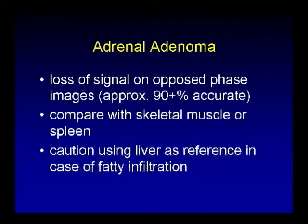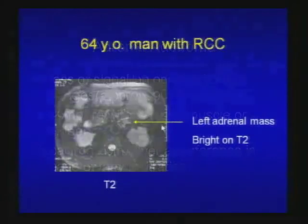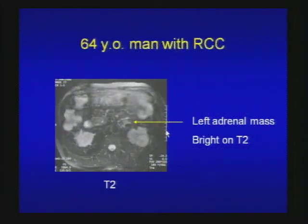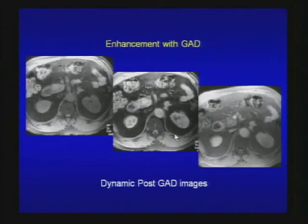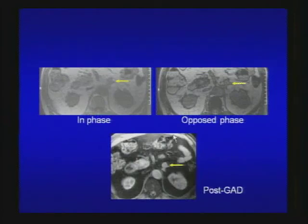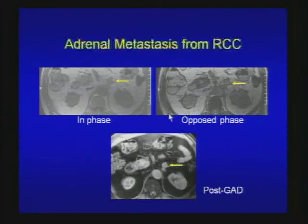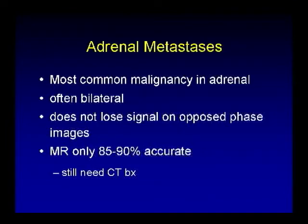Here is a 64-year-old man with renal cell carcinoma. Left adrenal mass — bright on T2, and on the opposed-phase images demonstrates no significant signal loss compared to skeletal muscle, so not typical for adrenal adenoma. Patient went on to get contrast-enhanced MRI showing the renal cell carcinoma on the left. In this patient with RCC, this left adrenal mass is metastasis. Adrenal metastasis is the most common malignancy in the adrenal gland, often bilateral, does not lose signal on opposed-phase images, and MR is only 85 to 90% accurate, so CT-guided biopsies are still required.